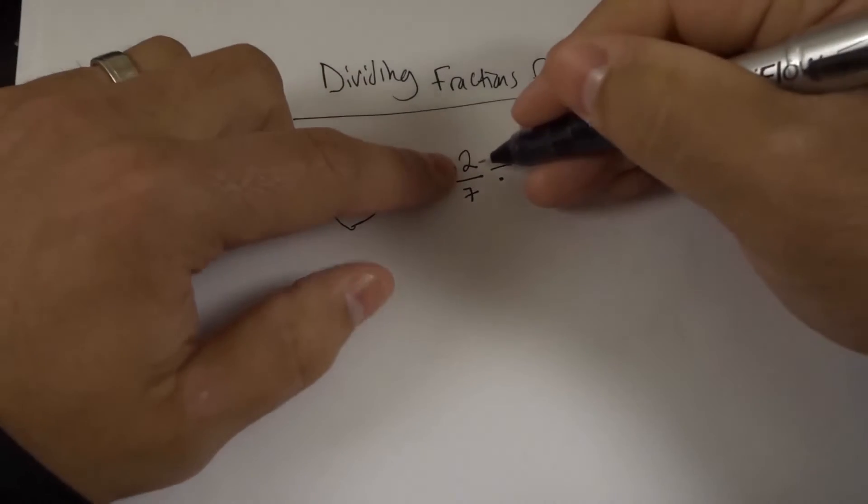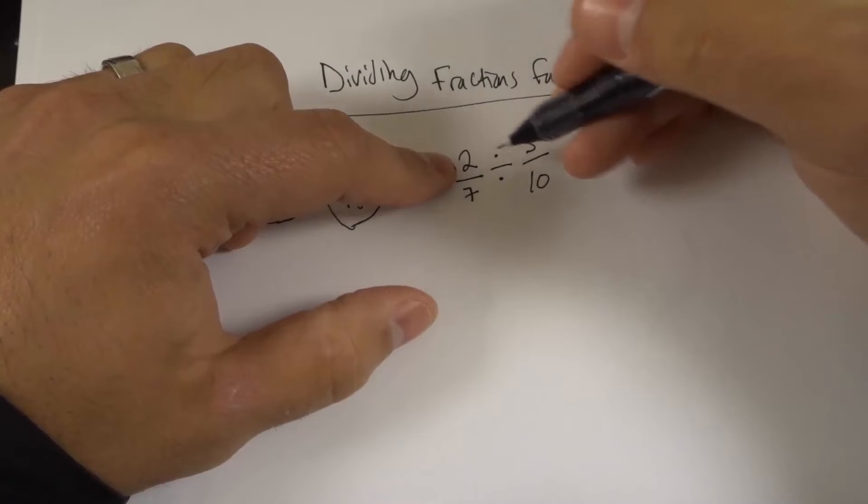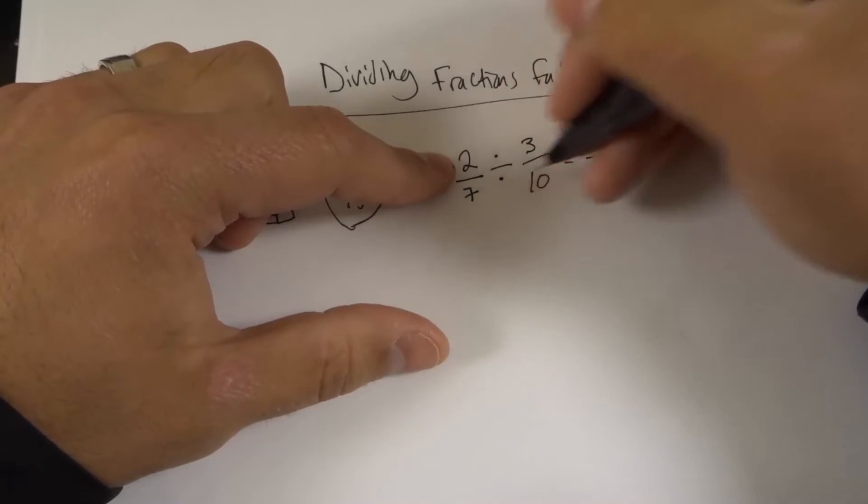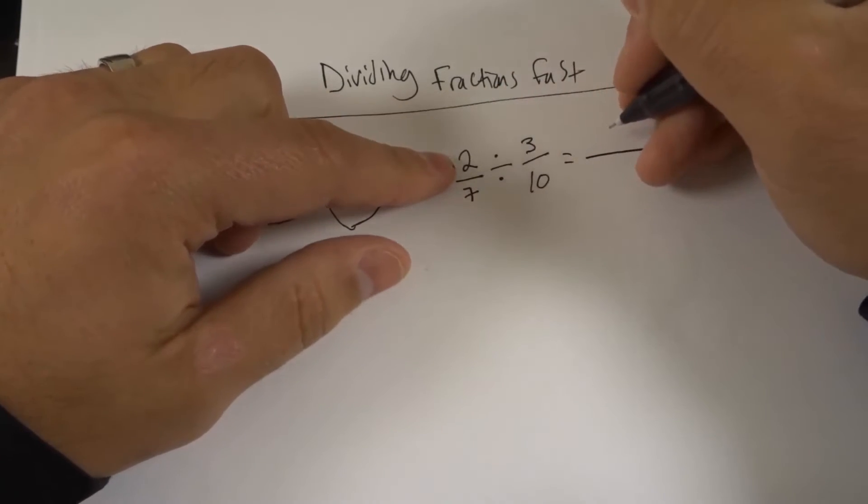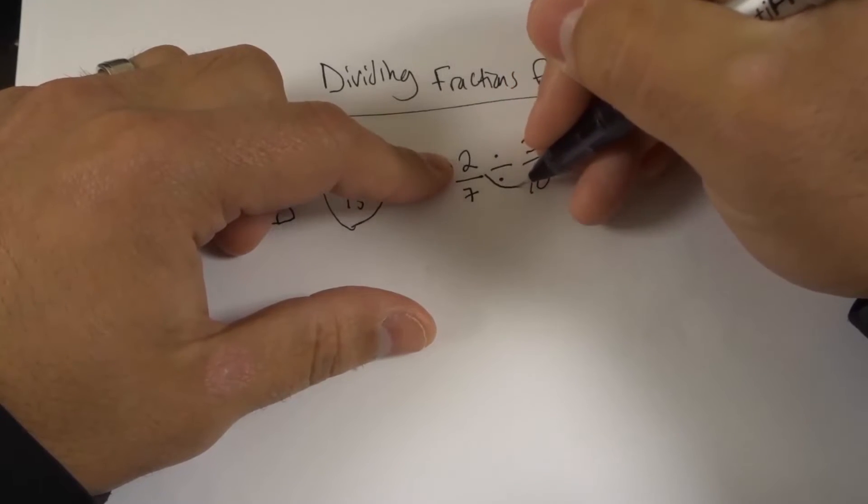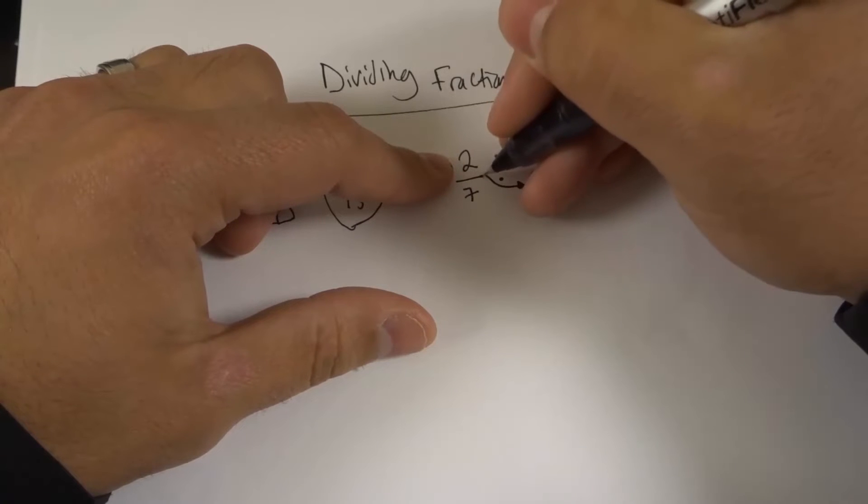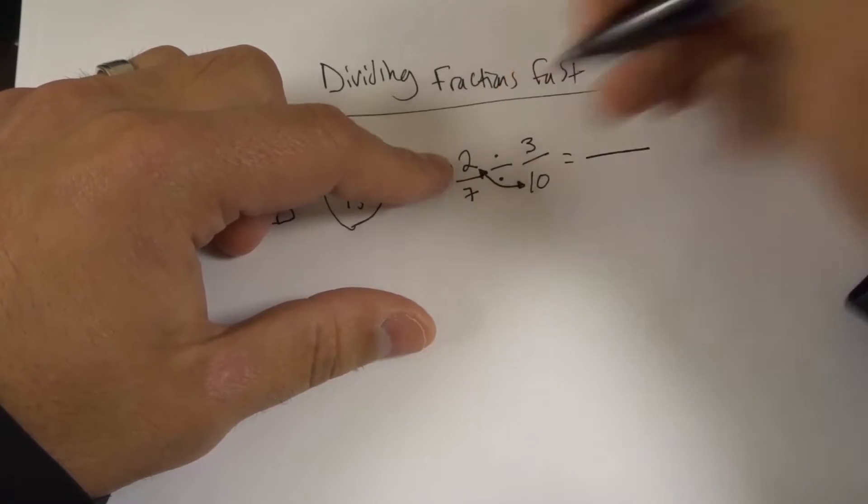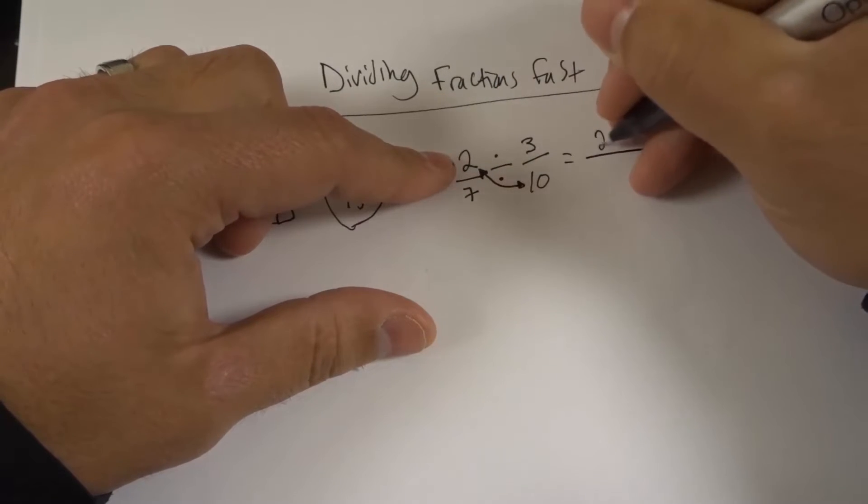So let's take our top left and bottom right and multiply them. 2 times 10. 2 times 10 is going to be 20, which is our top number of our answer. Top left and bottom right, right here. These two numbers will give us our top number of our answer. 2 times 10 is 20.